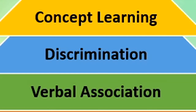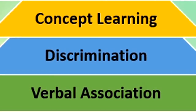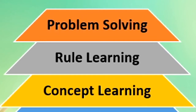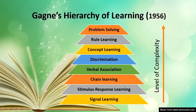As learning grows, it moves to discrimination — distinguishing between different types of experiences. Initially a child may call all males 'papa' or all females 'mama,' but later discriminates who is actually their parent. Verbal association grows into discrimination, and from discrimination they form concepts — mental pictures. Then concept learning moves to rule learning, understanding how concepts connect and contribute to form rules. Finally, rule learning moves to problem solving, where you apply concepts and rules to solve problems. This represents levels of complexity in the hierarchy of learning.